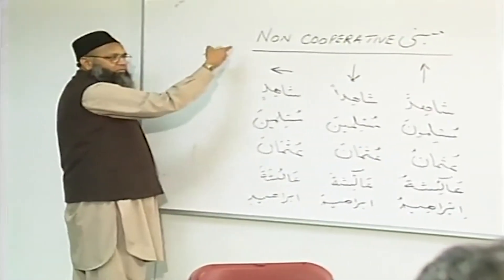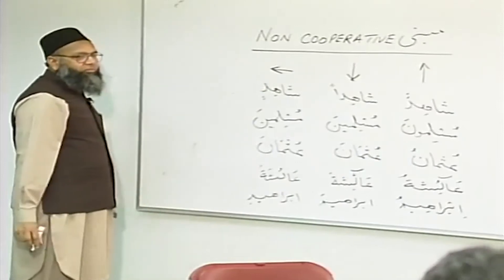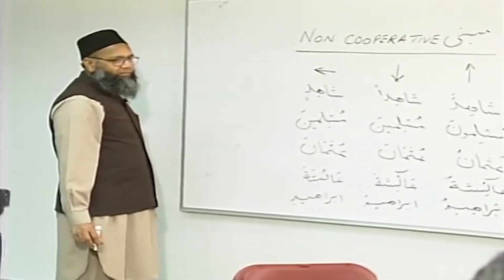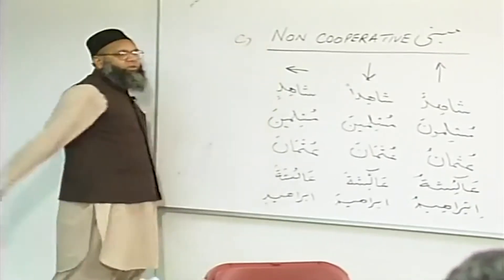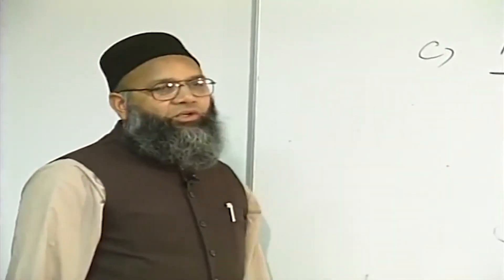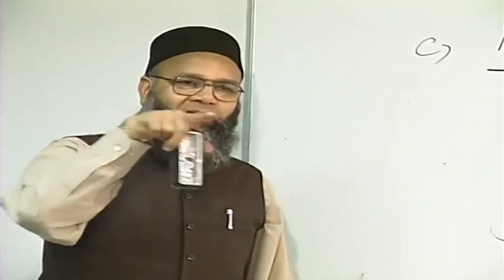The third category is Mabni. What was the format of Ghair Munsarif and Mu'rab? Mu'rab was capital A, and the normal Ghair Munsarif was small b. So this Mabni will be small c. In the Mabni category you don't have any change in the noun. The noun will be used in one single form in Rafa form, Nasb form, and Jar form. From the context you have to conclude which form it is.